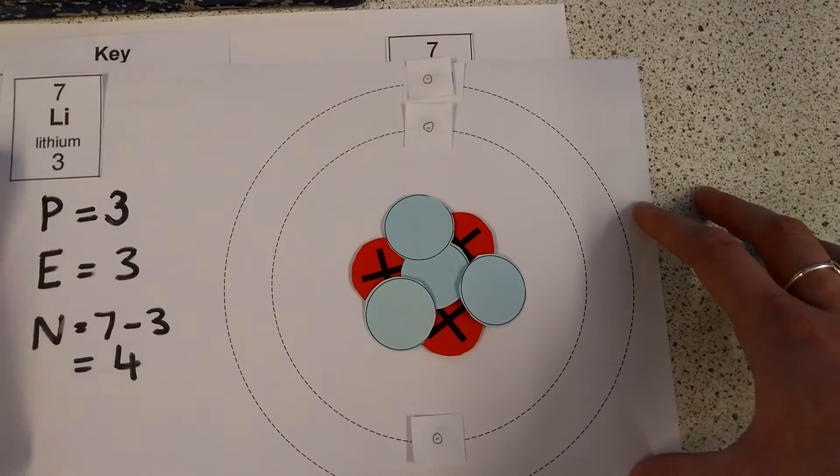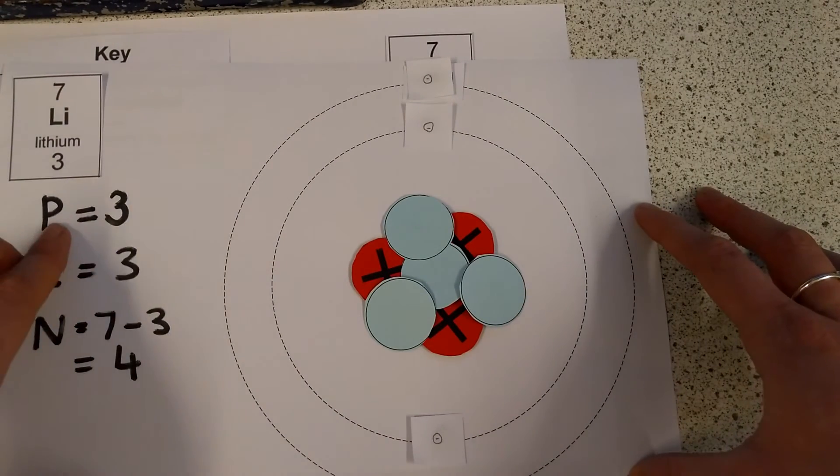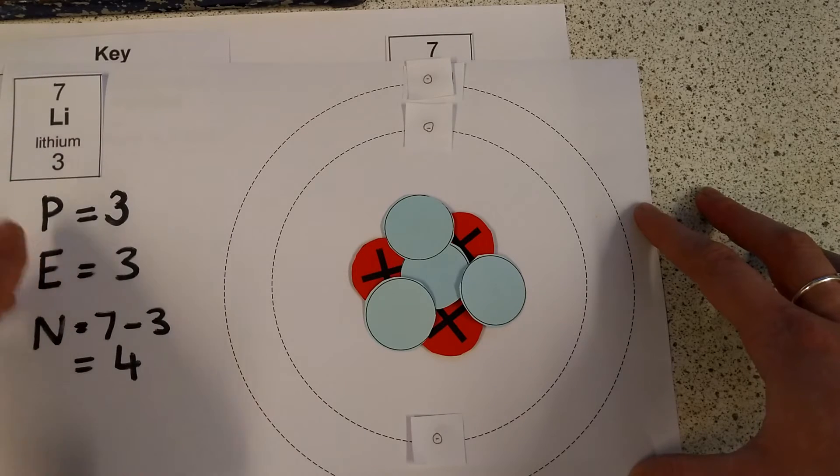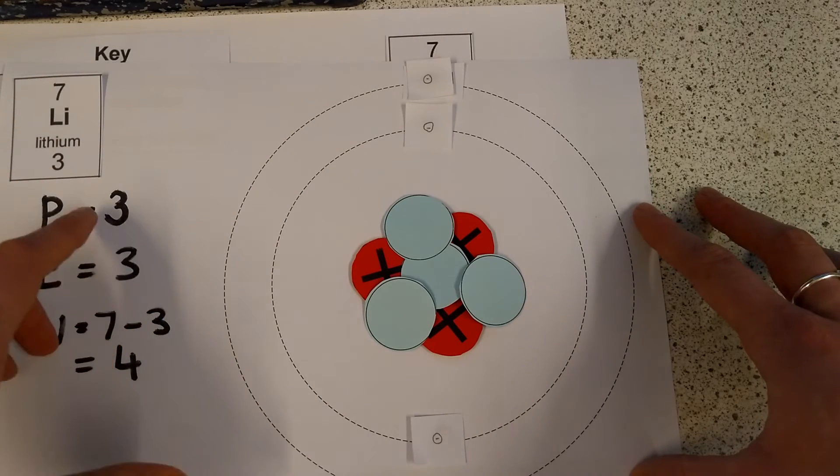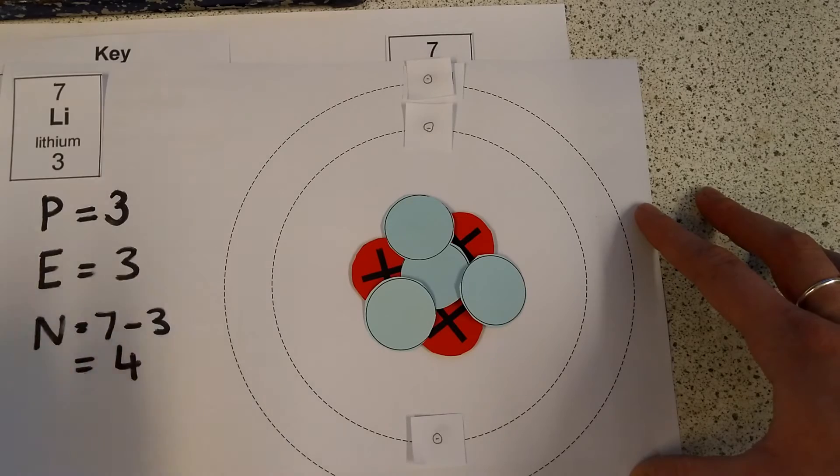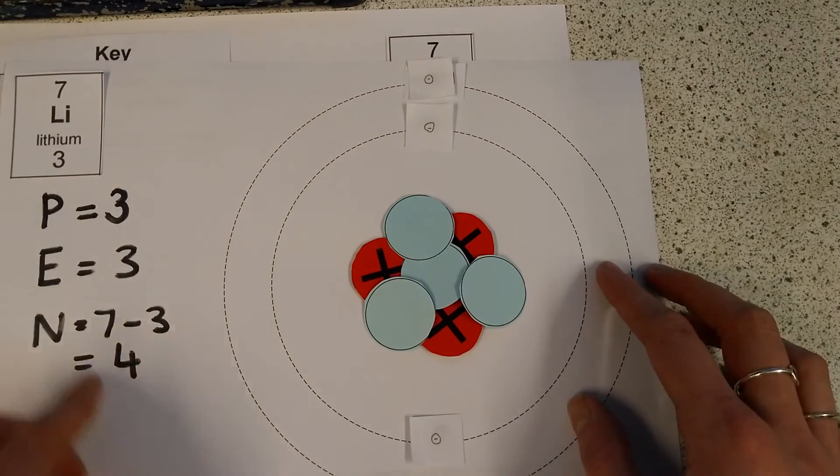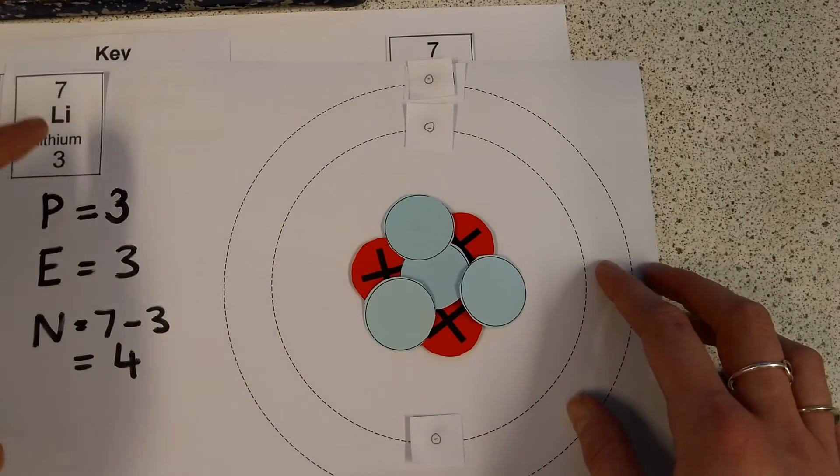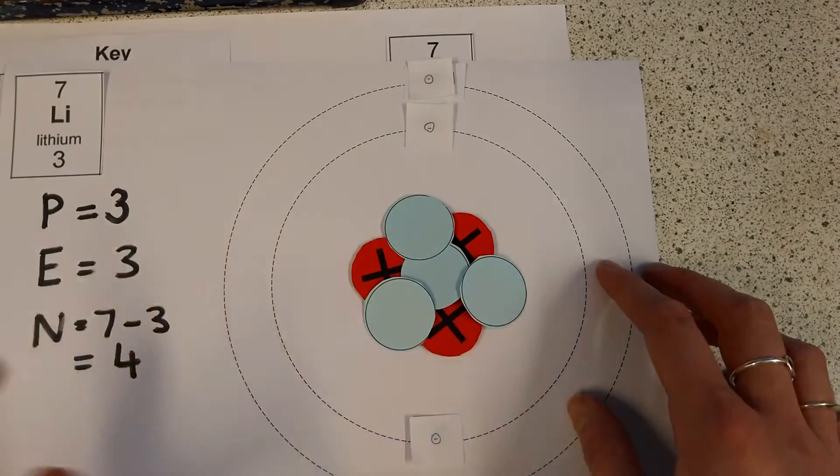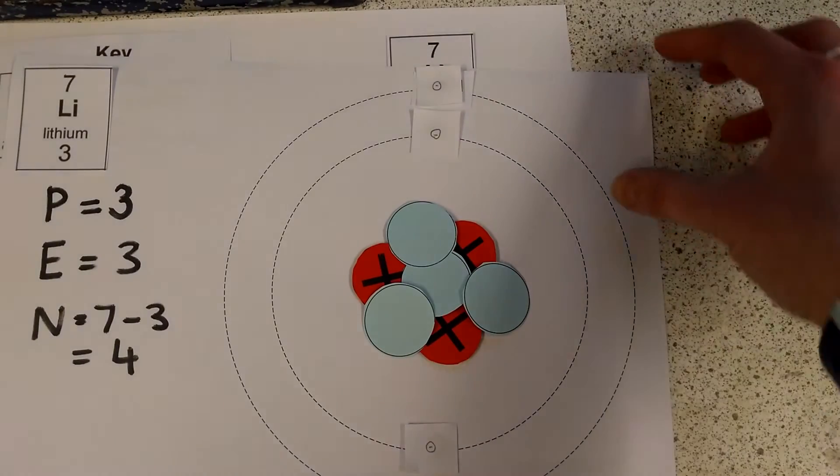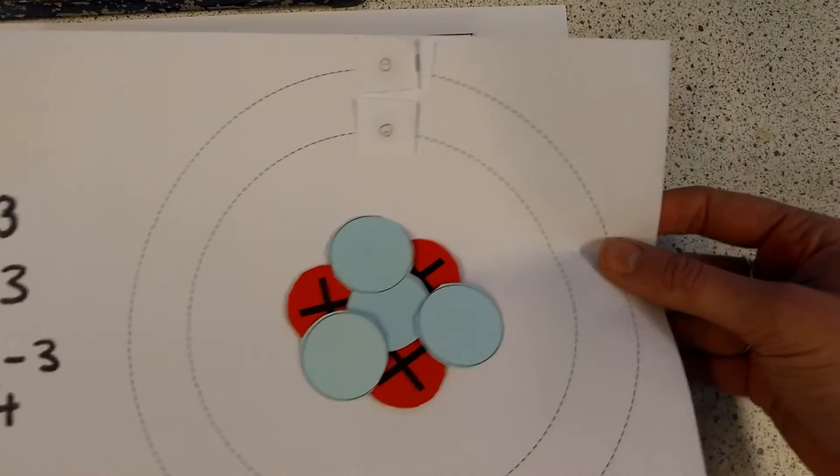So we've done that one. We know that lithium has got 3 protons, which I got from here. And then it's got 3 electrons, because if it's got 3 protons, it needs 3 electrons to be balanced. And then it's got 4 neutrons, because overall the mass must be 7 from here. And we know that 3 of those are protons and neutrons are all we've got left. OK, so let's have a look at one little more example.